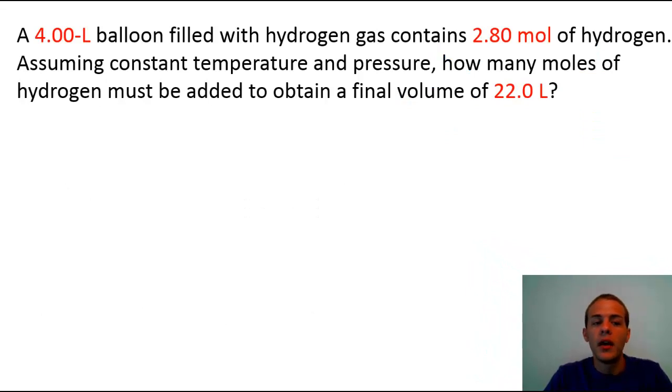So it says that we have a 4.00 liter balloon that is filled with hydrogen gas and it has 2.80 moles of hydrogen in it. And we're going to assume constant temperature and pressure in this problem and it asks us how many moles of hydrogen must be added to obtain a final volume of 22.0 liters.